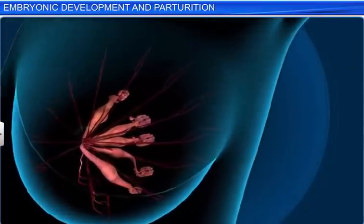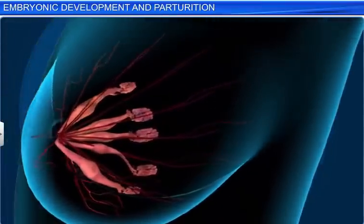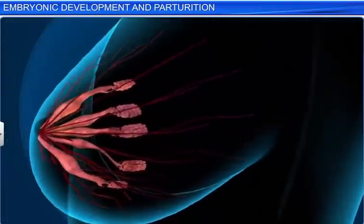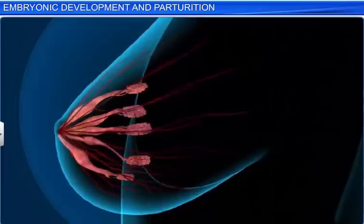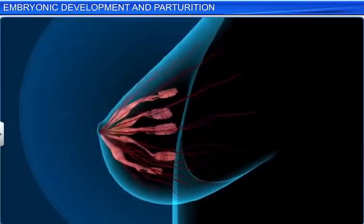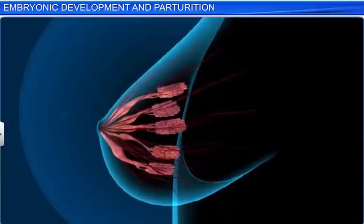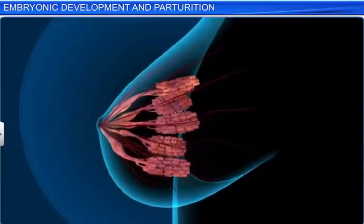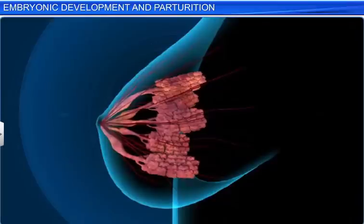Hormonal changes also cause the cells of the mother's mammary glands to differentiate, resulting in these glands producing milk by a process called lactation towards the end of pregnancy.